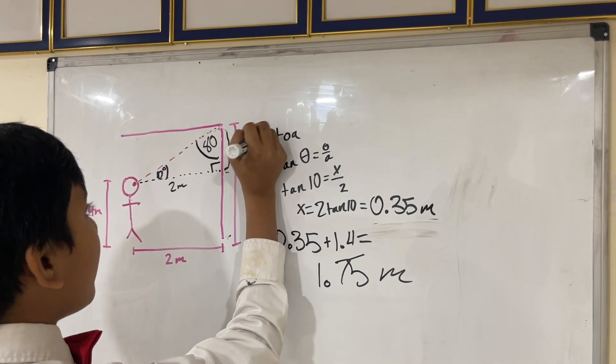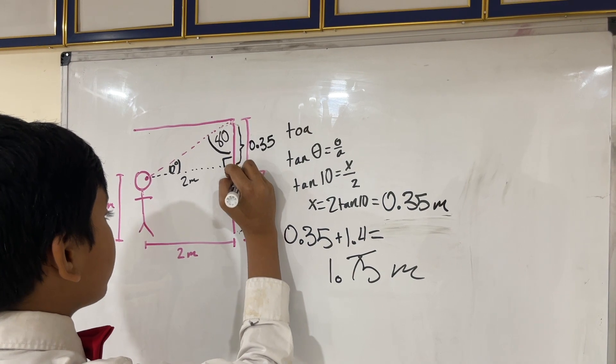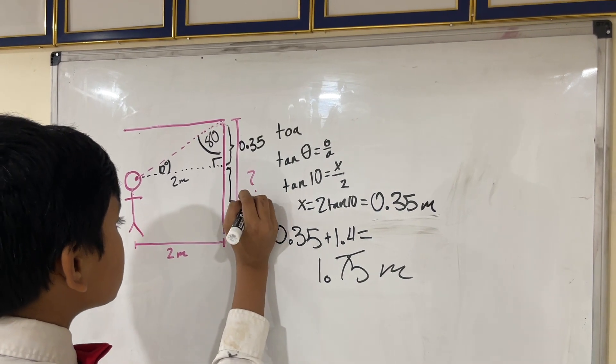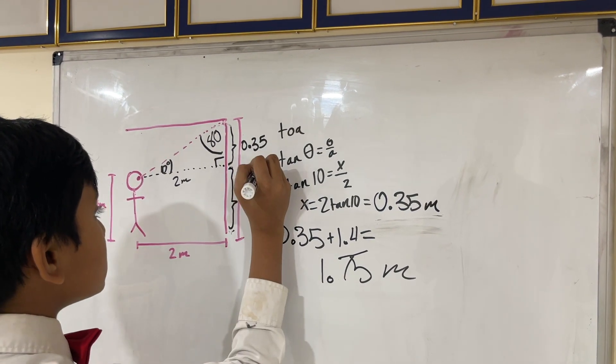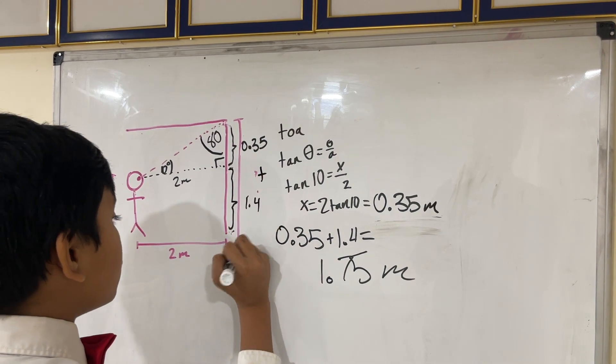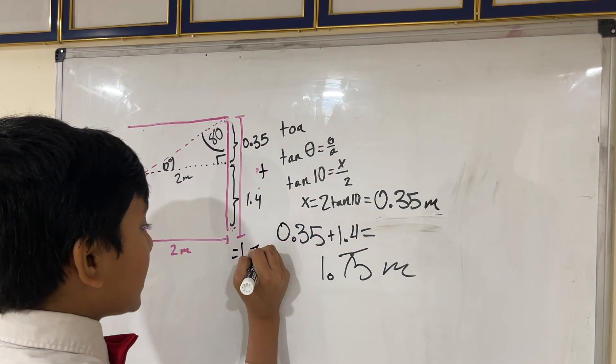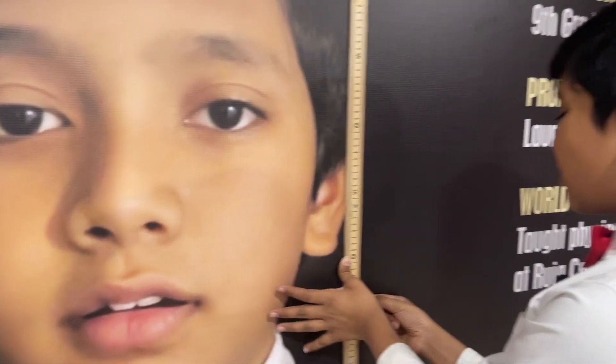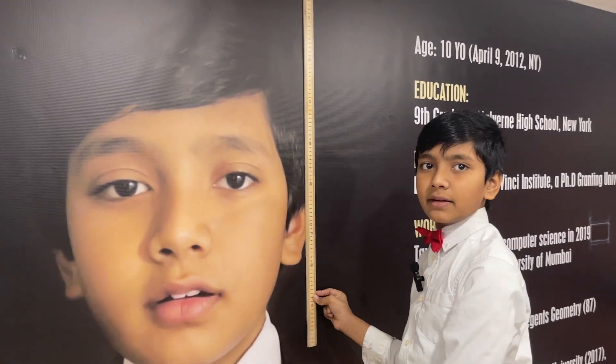Now, 0.35, I'm just going to write 1.4 over here on the other side, and both of those add up to 1.75 meters. We have the height as 1.87 meters.